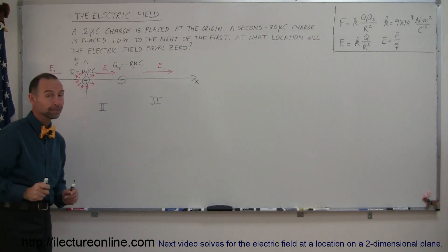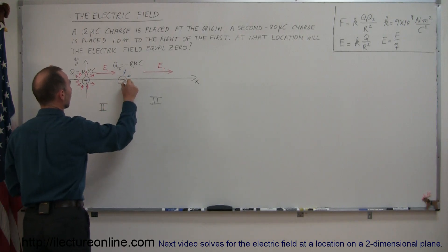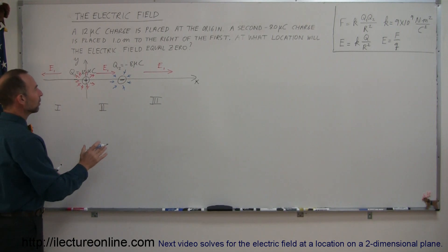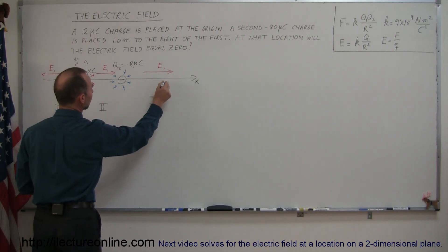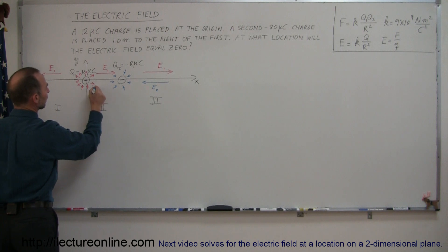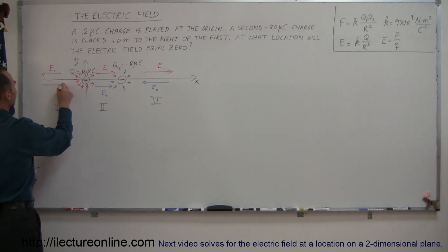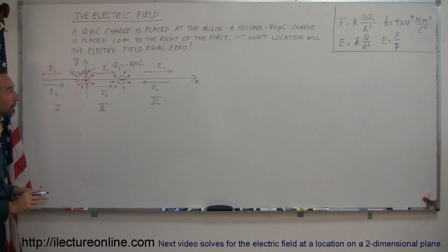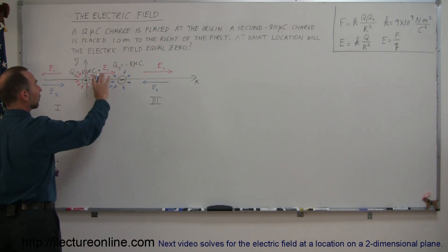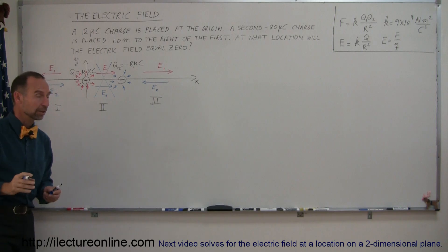Now for the second charge — remember that for a negative charge, the electric field points toward the charge. So in region one, E2 points to the right (toward Q2). In region two, E2 also points to the right. And in region three, E2 points to the right as well. Between the two charges, both E1 and E2 point in the same direction, so they cannot cancel — region two is not where the electric field is zero.